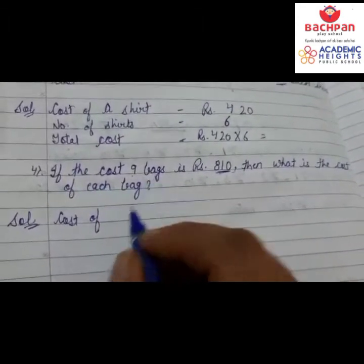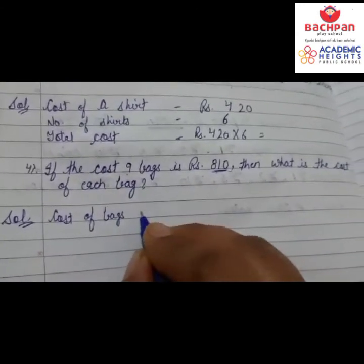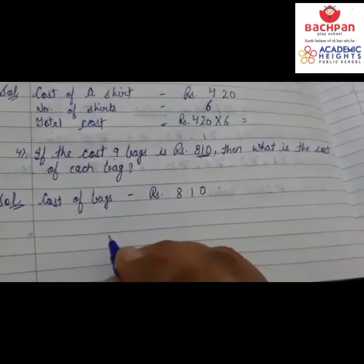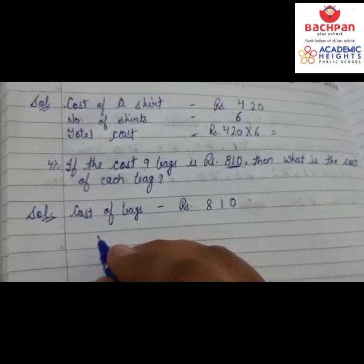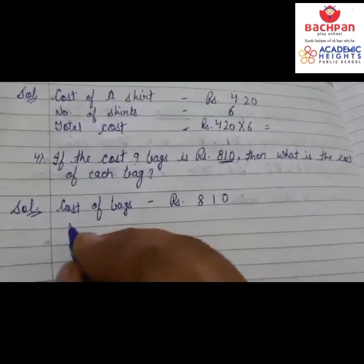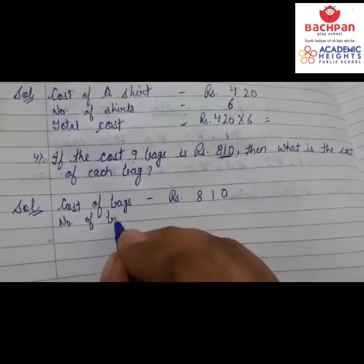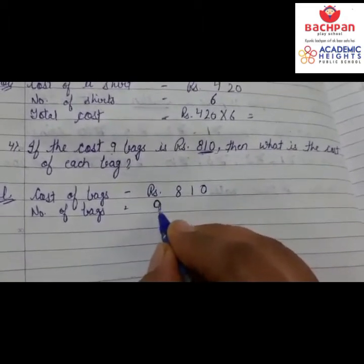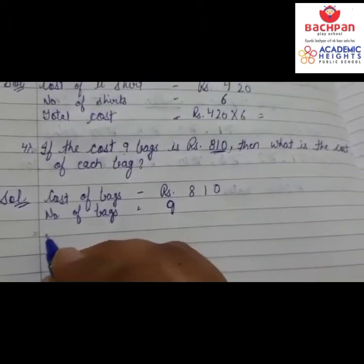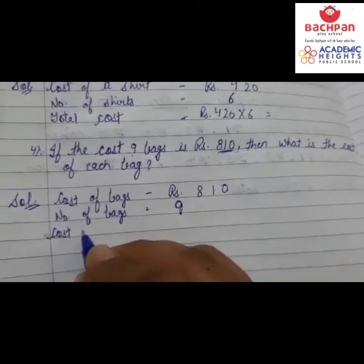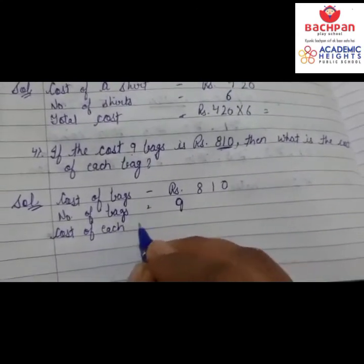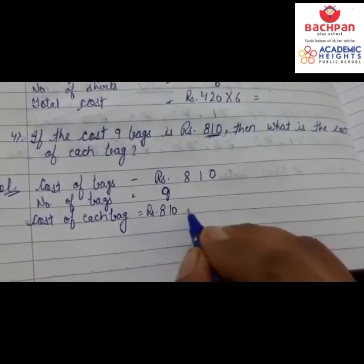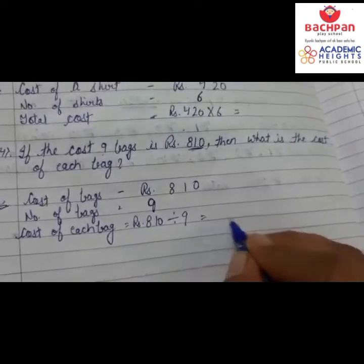Let's make the statement. First line: Cost of bags — rupees 810. Next line: Number of bags — nine bags' value is given. Next line: Cost of each bag — rupees 810 divided by nine equals the answer.